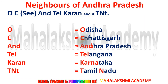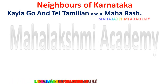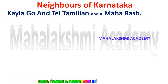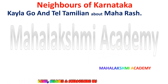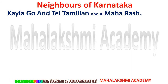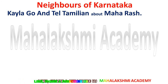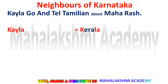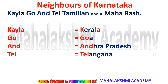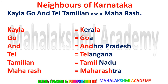Now let's look at the neighbors of Karnataka. We can learn these through the trick: 'Kaila go and tel Tamilian about Maharashtra.' There was a big rush, so Kaila — a girl — told someone to go and tell Tamilian about Maharashtra. Kaila is for Kerala, Go is for Goa, And is for Andhra Pradesh, Tel is for Telangana, Tamil is for Tamil Nadu, and Maharashtra is for Maharashtra. These regions share boundaries with Karnataka.